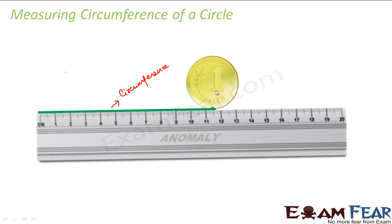Now, do you think this method is a very convenient one? Whenever you see a circle, making all this arrangement and rotating it to find the circumference — this method is fine to find it out for the first time, but it cannot be used as a very convenient method.